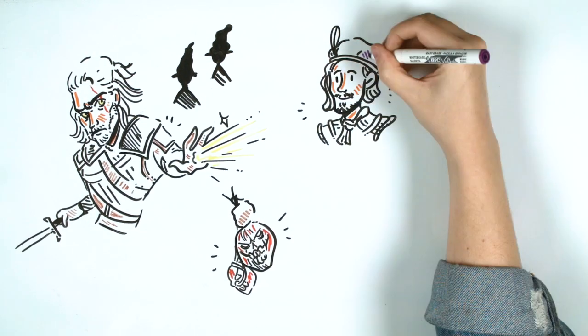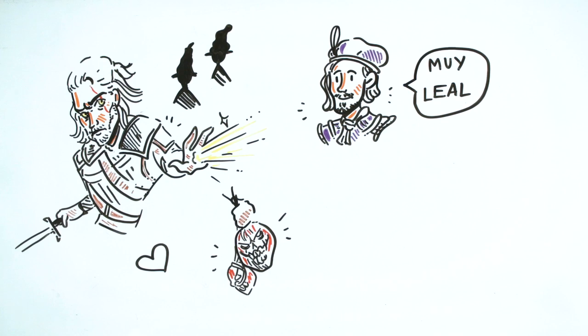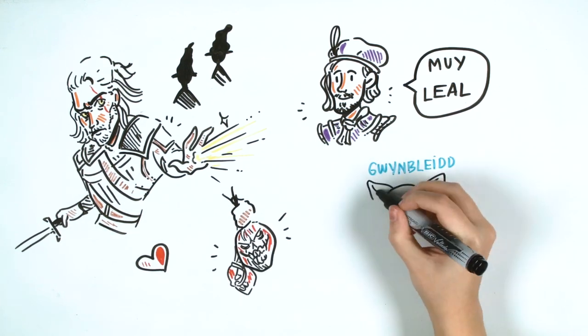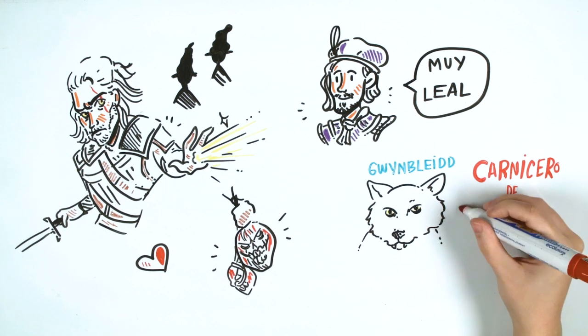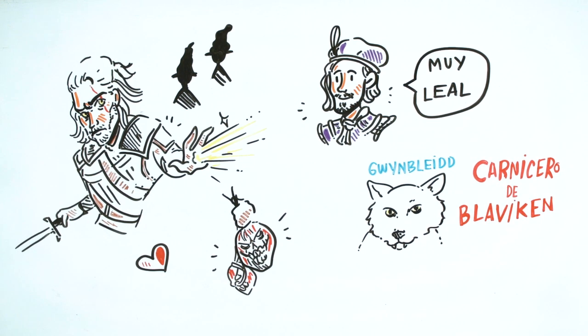But Jaskier, his best friend, defines him as peacefully loyal. He has some strong principles. Geralt is also known as Gwemolid in the Elvish language, which means white wolf. Sometimes he is also called the Butcher of Blaviken for an unfortunate event that occurred in the city.